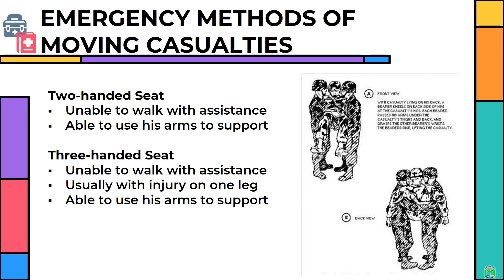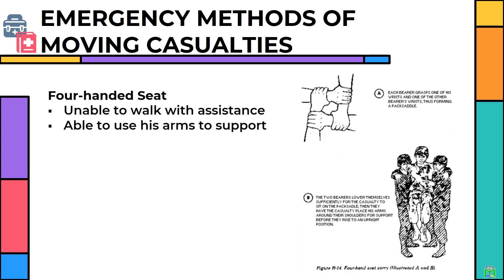The three-handed seat method: a casualty lies on his back. A bearer kneels on each side at the casualty's hips. Each bearer passes his arms under the casualty's thighs and back and grasps the other bearer's wrists. The bearers then rise, lifting the casualty. Four-handed seat — unable to walk with assistance but able to use arms for support: each bearer grasps one of his own wrists and one of the other bearer's wrists, forming a pack saddle. The two bearers lower themselves for the casualty to sit on the pack saddle, then have the casualty place his arms around their shoulders before rising to an upright position.